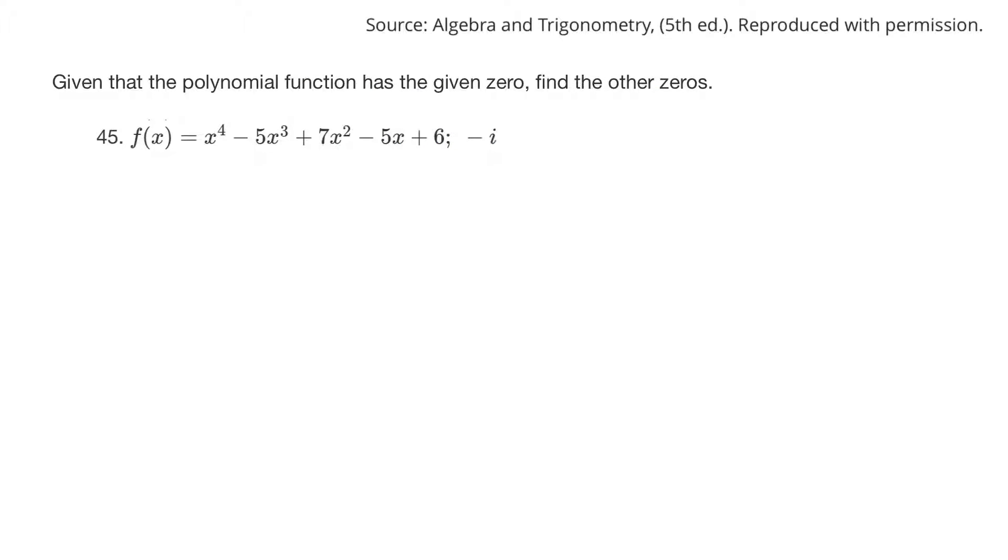The question I'll just show you is this one. They say, given the polynomial has the given zero, so it has this zero, they want to find all the other zeros. So there has to be 4 of them. So if one of them is minus i, I have to have another one that's a plus i. And then there's got to be 2 other ones. So let's try using synthetic division to find the other ones.